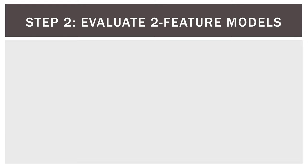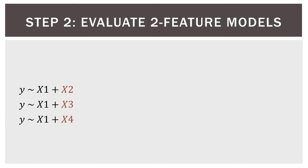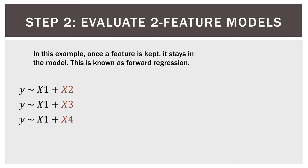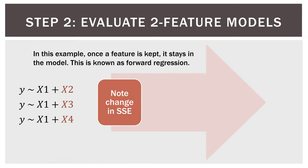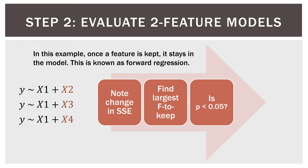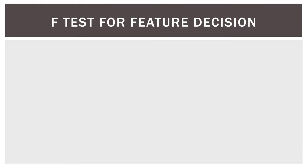Step two: evaluate two-feature models. X1 (square footage) is in and stays in. Now we match it with each remaining variable — X2, X3, and X4. This process is step-by-step forward selection regression: once a variable is in, it stays, then we build from there. We note the change in error, find the largest F, check significance, and keep the winner.